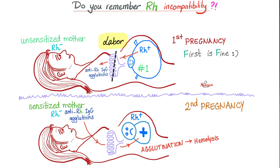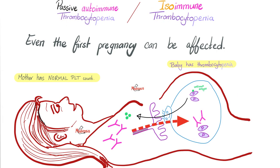This disease is similar to RH incompatibility — where mommy was RH negative and the baby was RH positive, and the baby's antigen triggered the mother to make antibodies to attack the baby. However, there is a big difference: RH incompatibility spares the first pregnancy (the first newborn is fine), but the second baby will be affected. Here, whether we're talking about passive or isoimmune, even the first pregnancy is vulnerable. The second is vulnerable, and the third might be even more so.